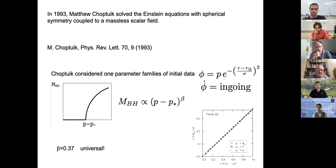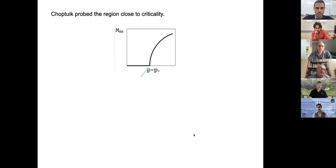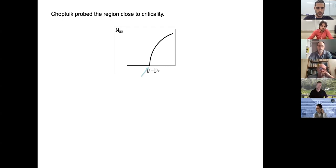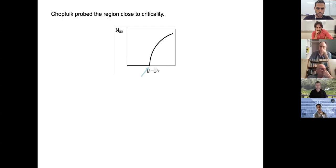The surprises kept coming. Choptuik had a rather sophisticated code — it had adaptive mesh refinement, so the code could put more points in the numerical grid wherever needed and lower the step size accordingly. At the time this was extremely cutting edge; it was the first time it was done in relativity. The algorithm he implemented, due to Berger and Oliger, had only been around for a few years.